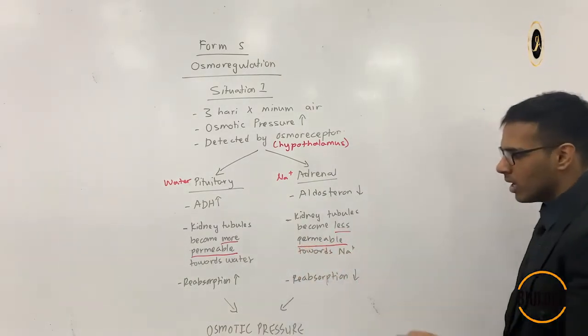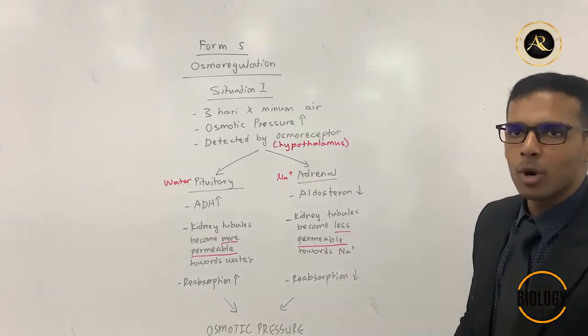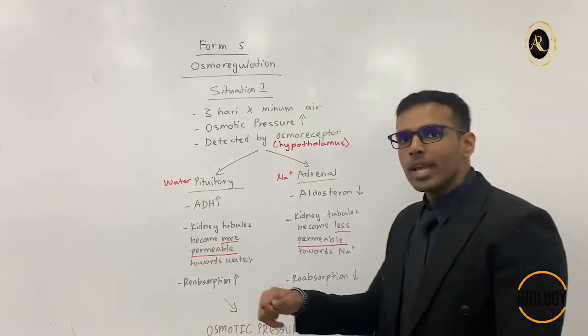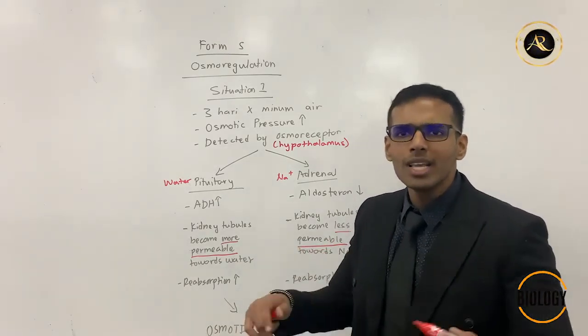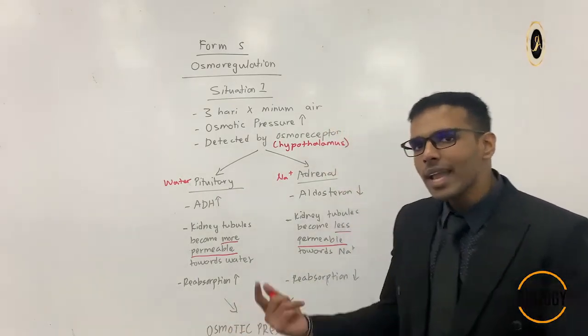If the level of aldosterone reduces, kidney tubules will become less permeable towards sodium ion. Therefore, sodium ions reabsorption back into our body will be lower. So if reabsorption of sodium ion is lower into our body, meaning a lot is being excreted.